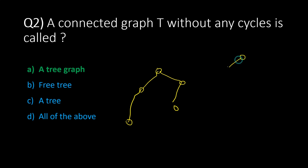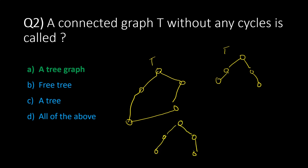This graph T and its tree representation look exactly the same. A graph becomes a graph when there are connections forming cycles — when there is an additional connection creating a loop. Without any cycle, it is called a tree graph.